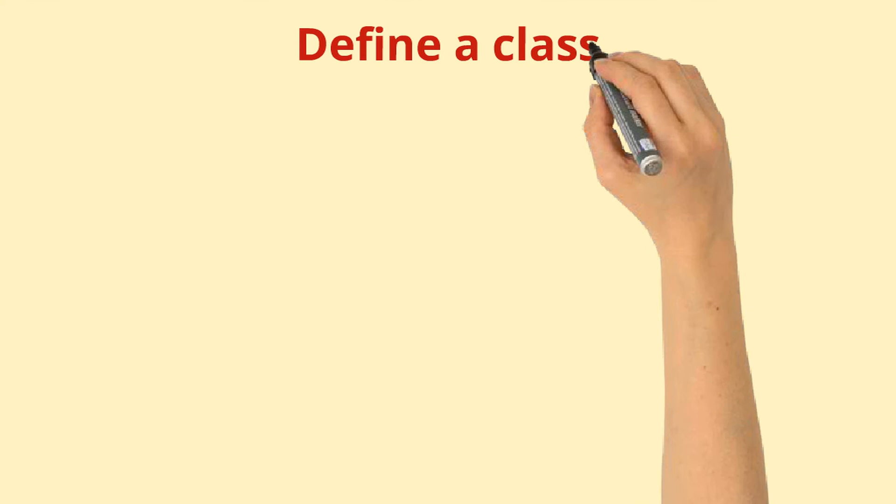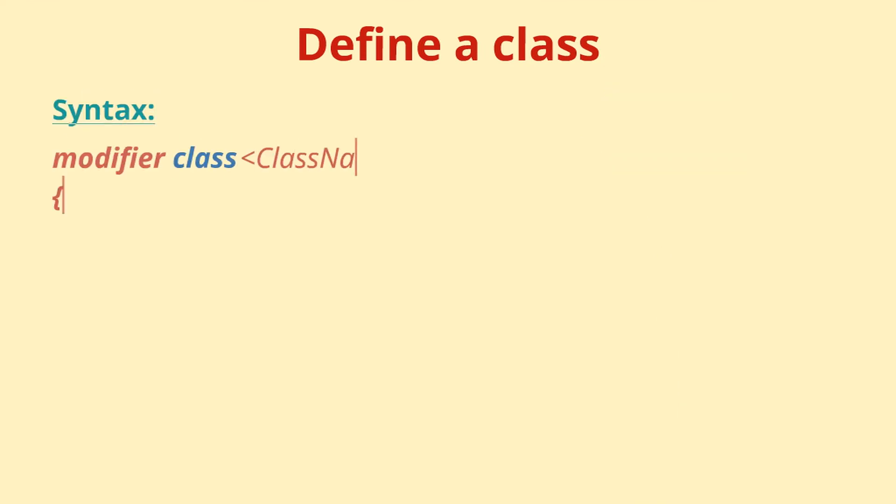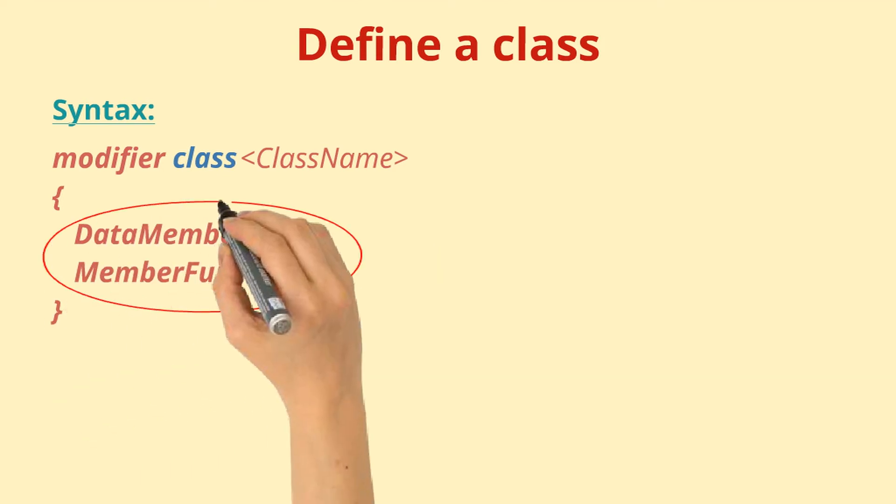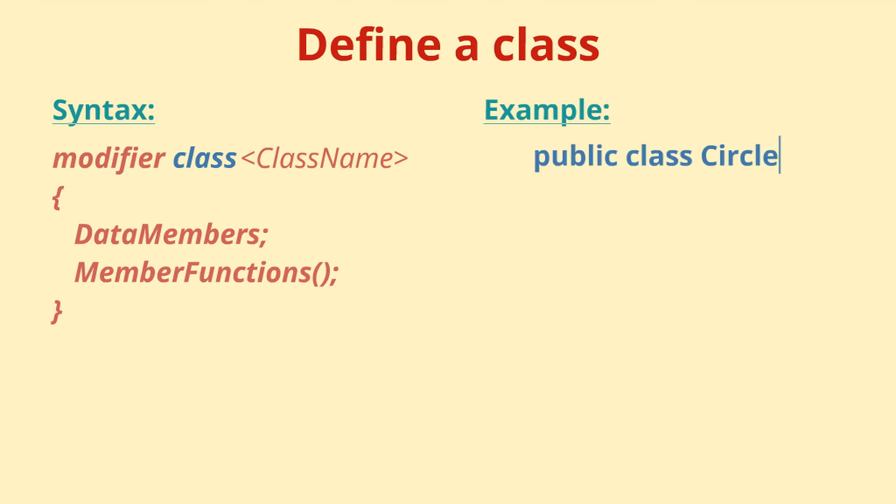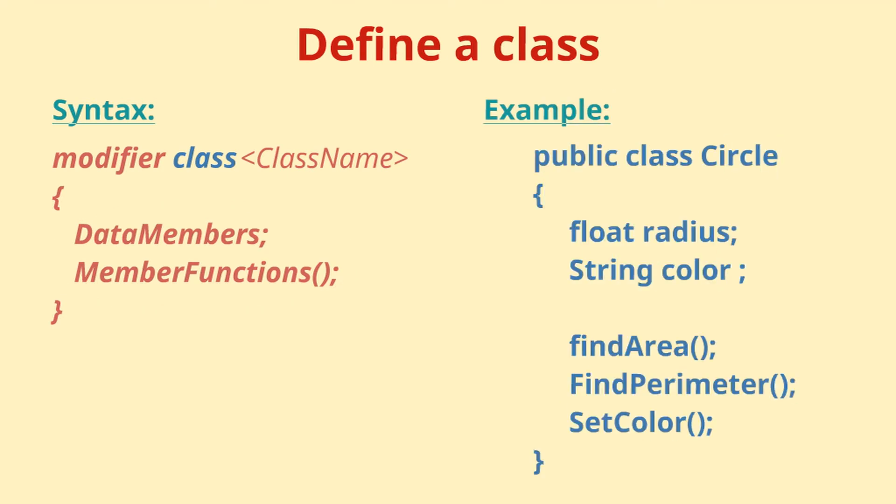Let's look at how we typically define a class and what is included in it. A class has data and functions or methods. For example, if we have a class circle, we could have data like radius, color, etc. and methods like find area, find perimeter, set color, etc.